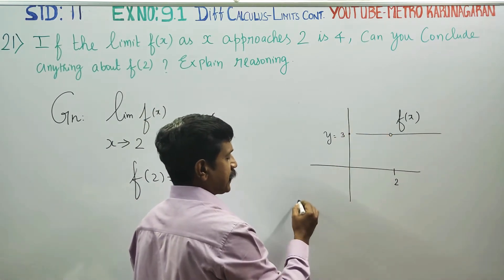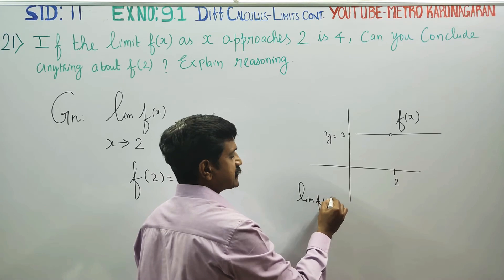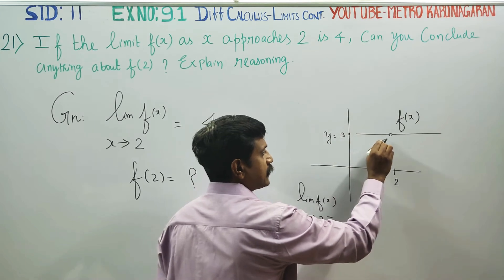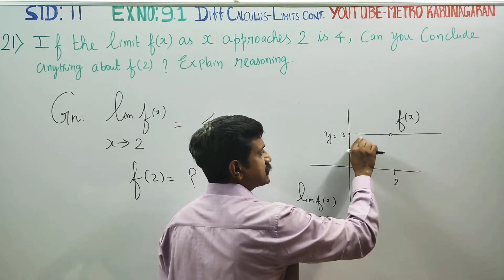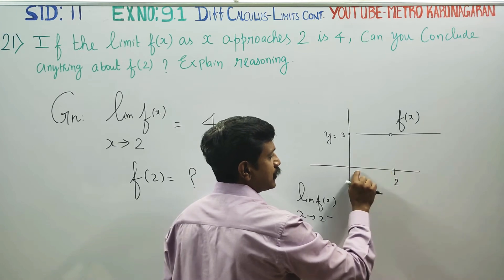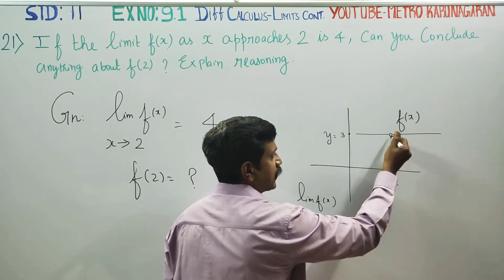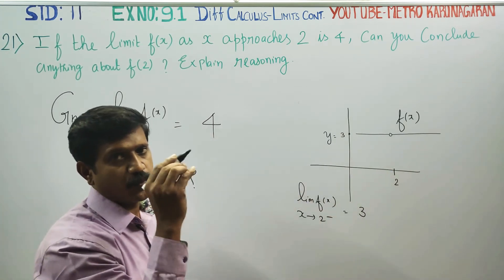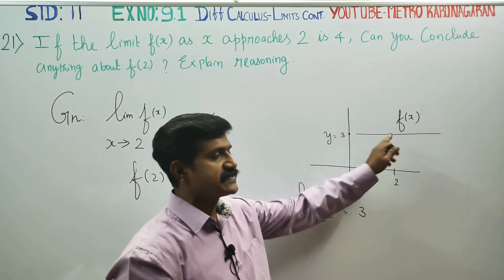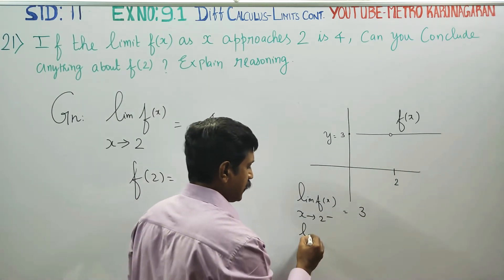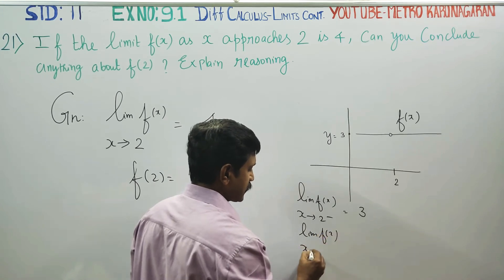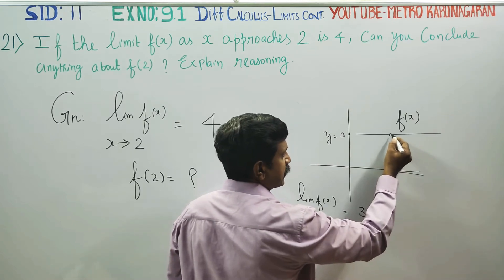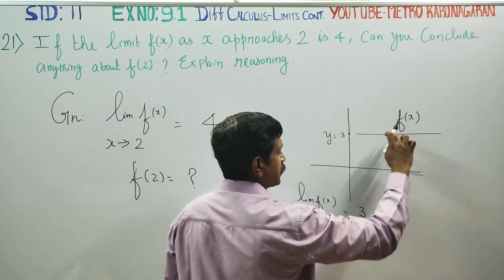In this example, the limit of f(x) as x turns to 2 from the left-hand side — if you approach from the left side, x turns to 2. This is my function; the function does not exist at that point. The limit of f(x) as x turns to 2 from the right (2 plus), this is the height of the graph, and the value of y is 3.